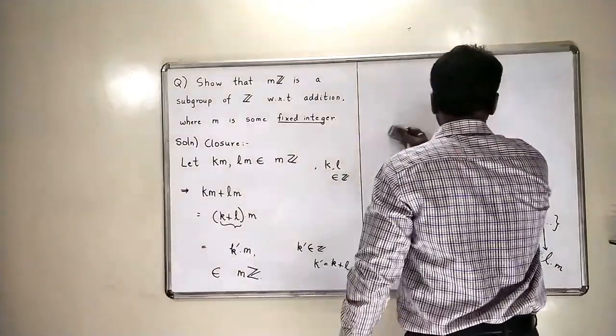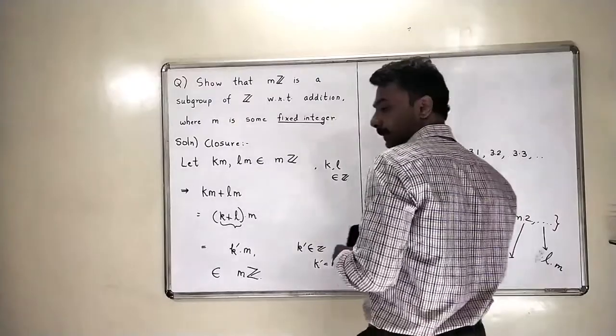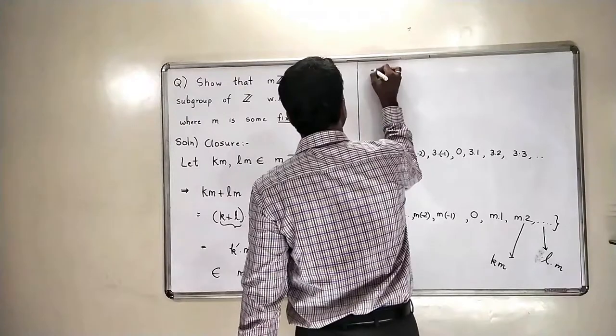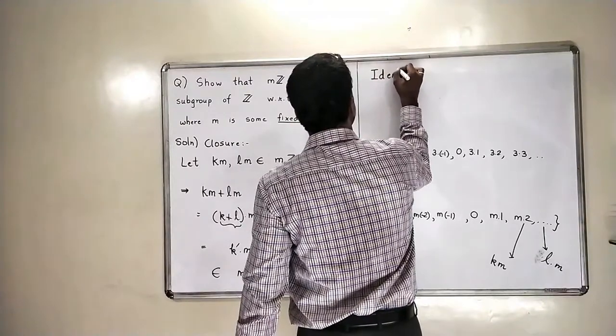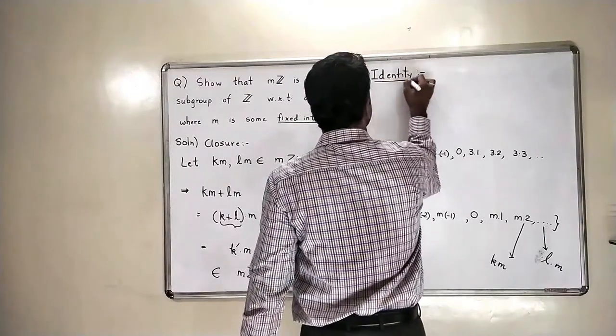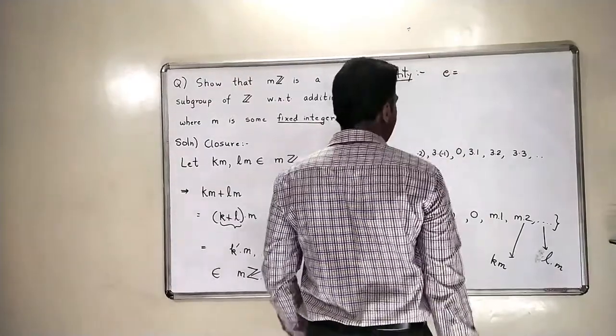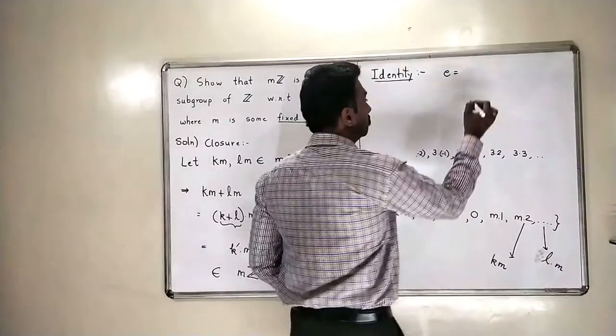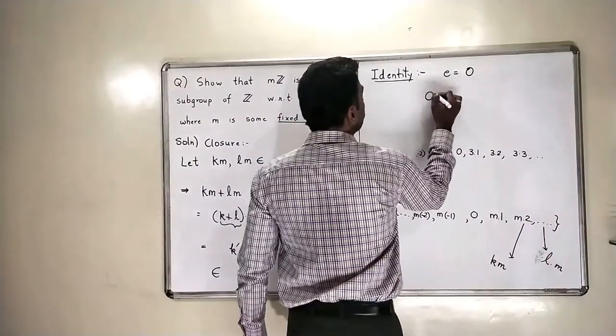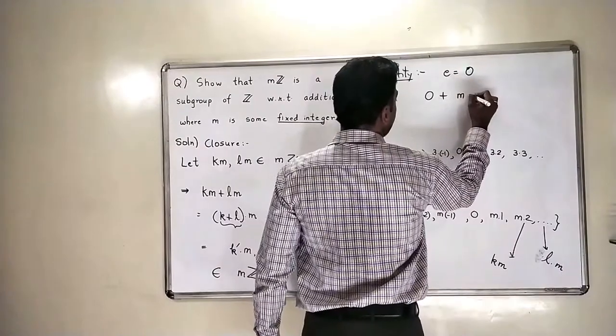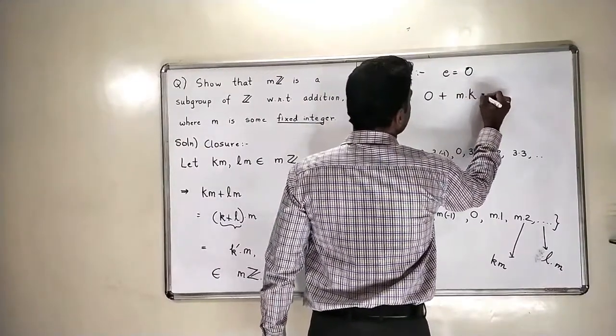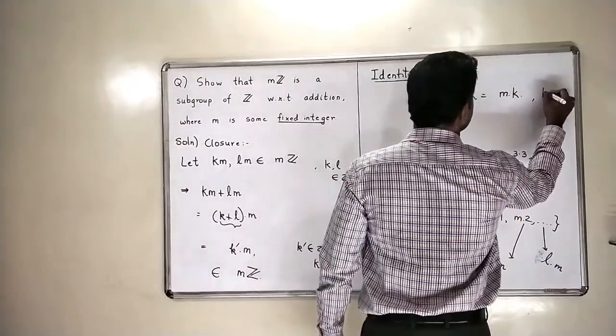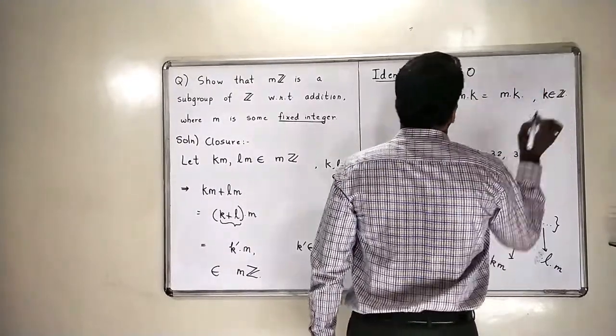Now, let us go to the second thing for subgroups. The second is identity. So, here you can clearly guess that the identity of this set mZ is 0 because 0 plus any m times k is again equal to m times k. So, k is an integer. So, this is the identity.